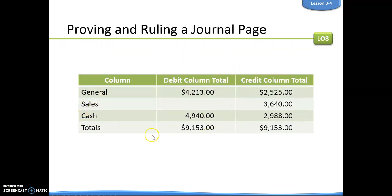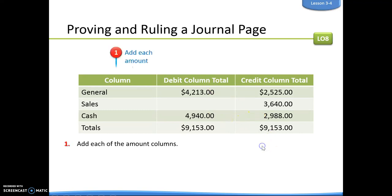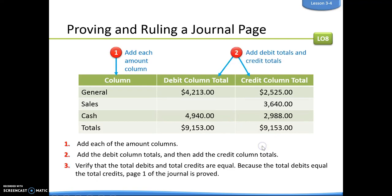Both MindTap and your workbook problems will give you this handy little sheet. We've got our general debit column total, our general credit column total. Sales has a credit and cash has both a debit and a credit. All we do is put in our totals for those columns and add them up to make sure they equal. If they equal — like you can see, we have the 9,153 — then we can rule our journal page and bring those totals forward to our next page and keep going with our transactions.